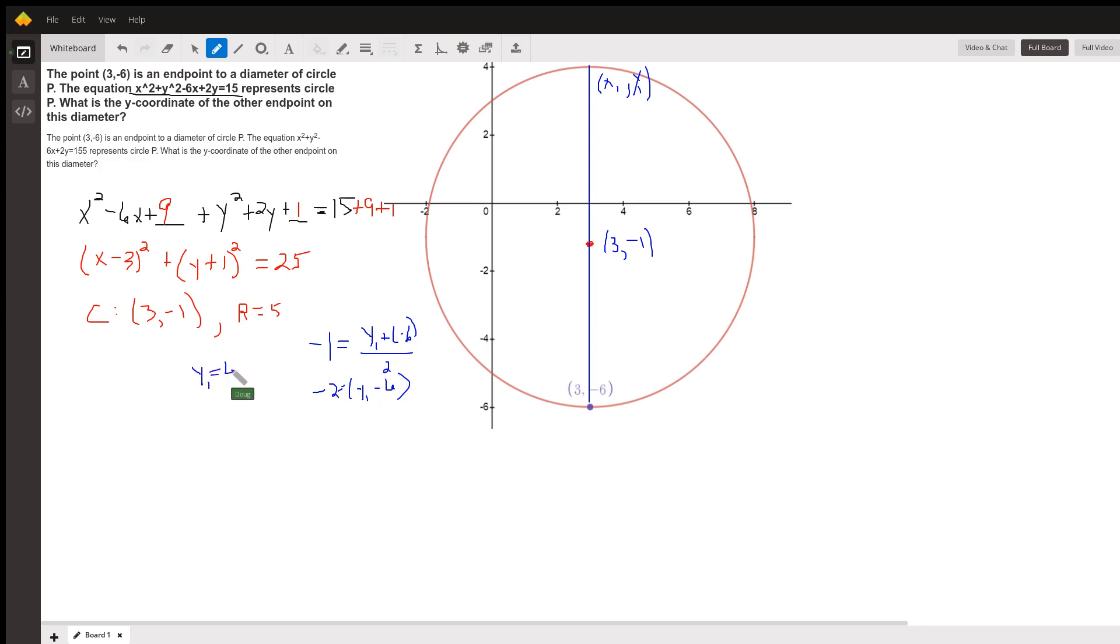And if it wasn't obvious, we could do the same thing with the x-coordinate to get the x-coordinate at the other endpoint of the diameter. So this point right here is 3, 4. There you go. Hope that helped.